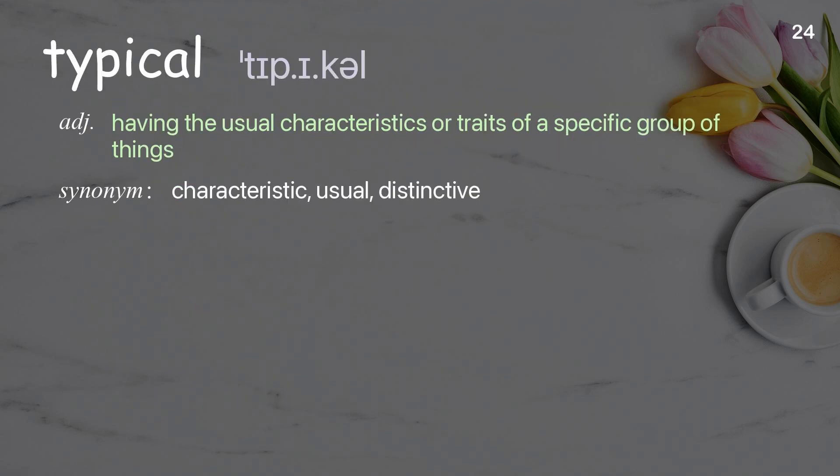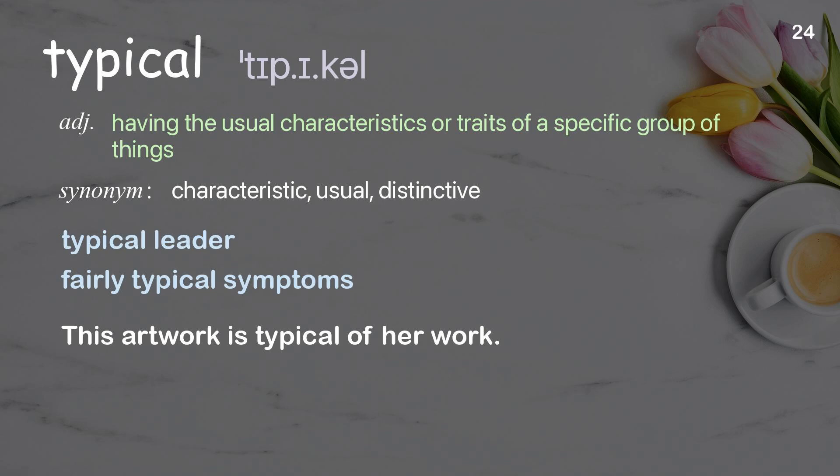Typical: having the usual characteristics or traits of a specific group of things. Examples: typical leader; fairly typical symptoms. This artwork is typical of her work.